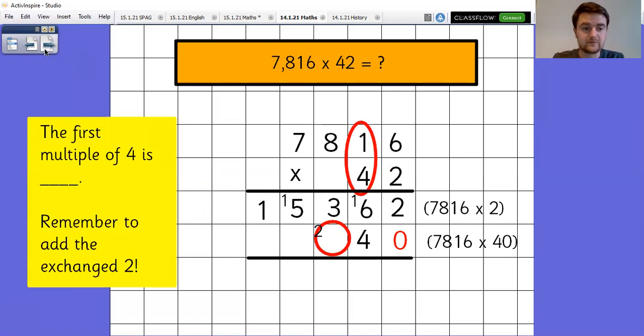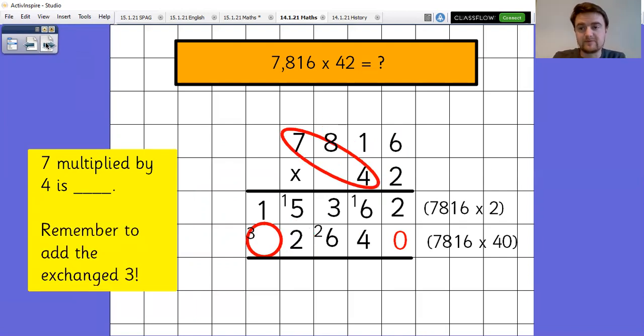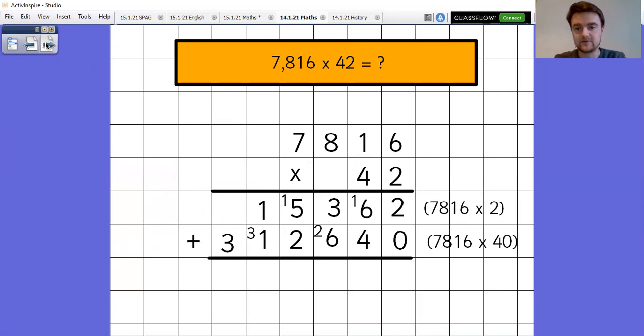One, the first multiple of four is four. Add the exchange two gives me six. Eight multiplied by four is 32. I can't fit 32 into the thousands column, so the two goes in there. Three gets exchanged. Seven multiplied by four is 28. Add the extra three gives me 31. So there is my two parts of my answer. All I need to do now is add them together.